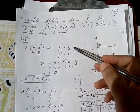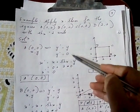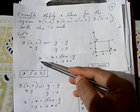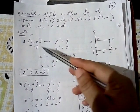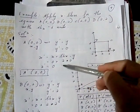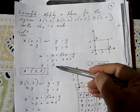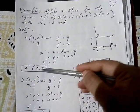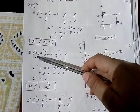For point A(0,0): using x-shear, y-dash = y = 0, so no change in y. For x-dash: x-dash = x + shx × y = 0 + 2 × 0 = 0. So A-dash is (0,0) — no change in the values of A.